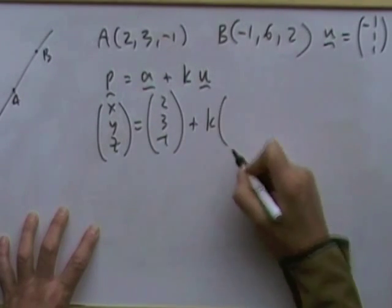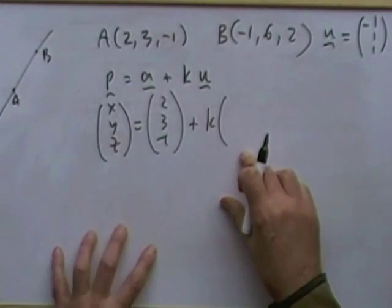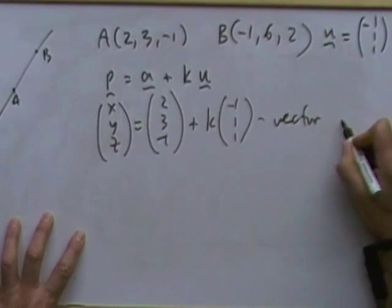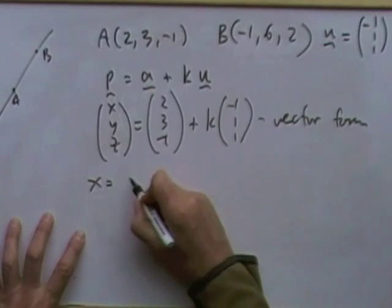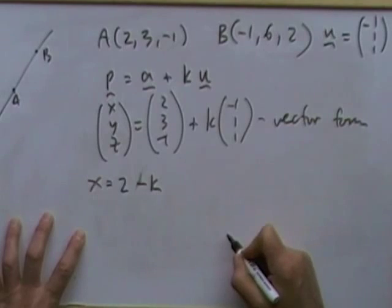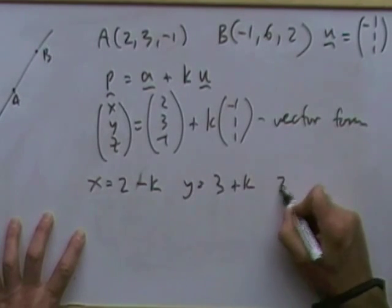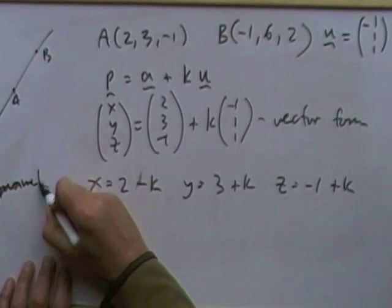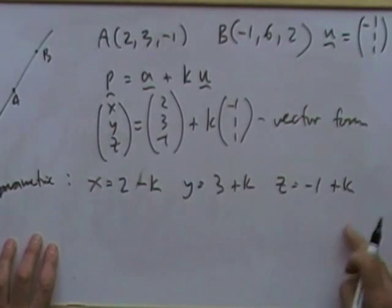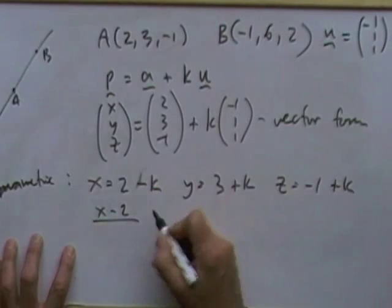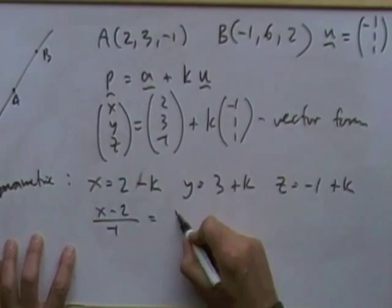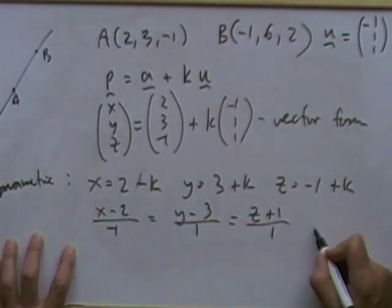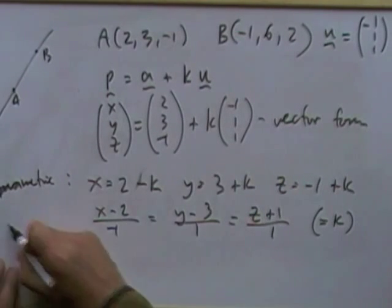Parametric form: x equals 2 minus k, y equals 3 plus k, z equals −1 plus k. Symmetric form: (x−2)/(−1) equals (y−3)/1 equals (z+1)/1 equals k. Any of these forms — parametric, symmetric, or vector — are valid and equivalent.